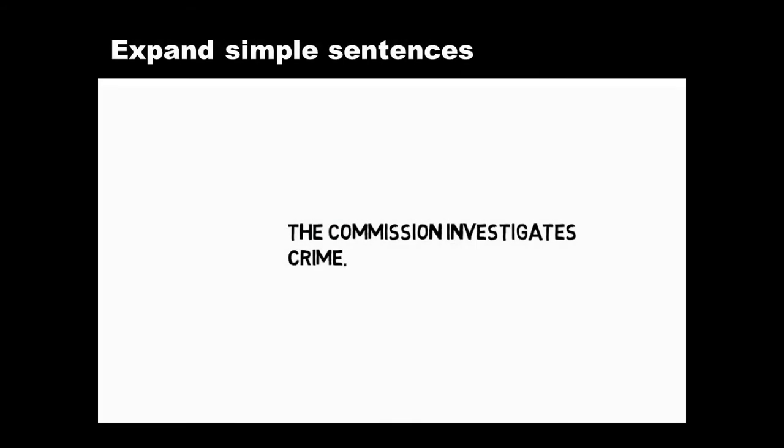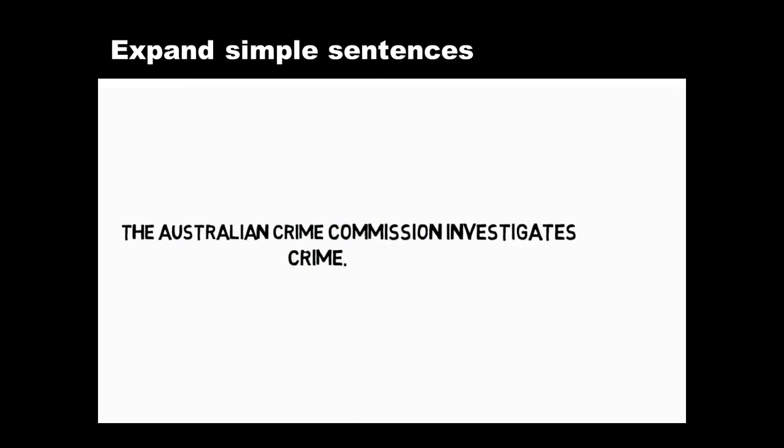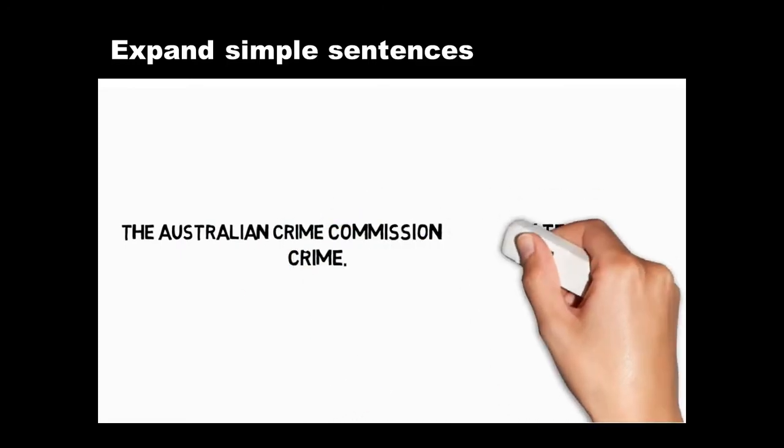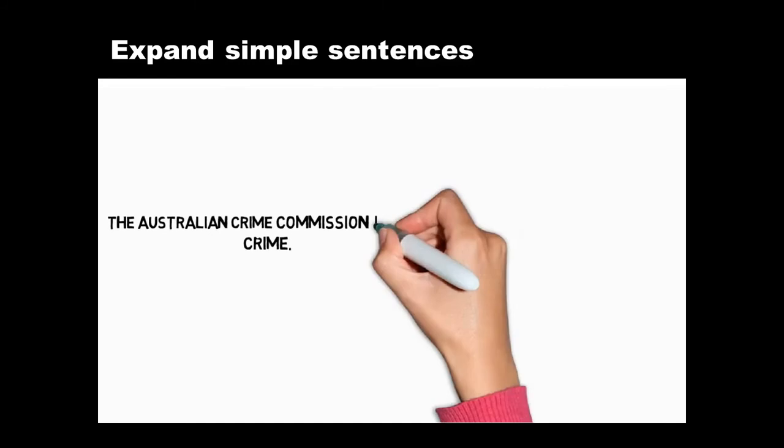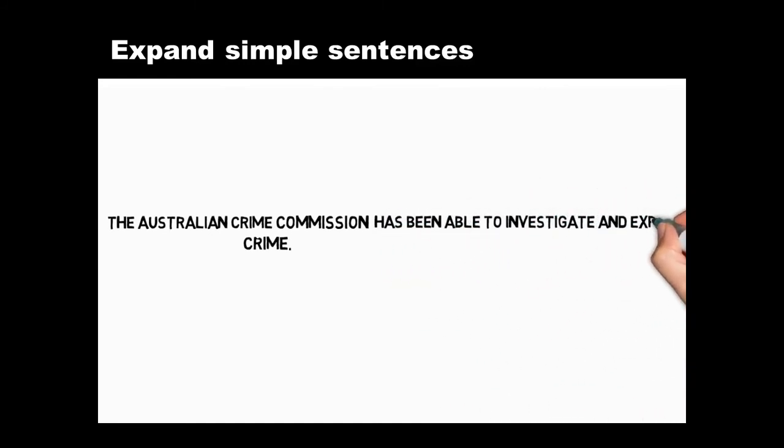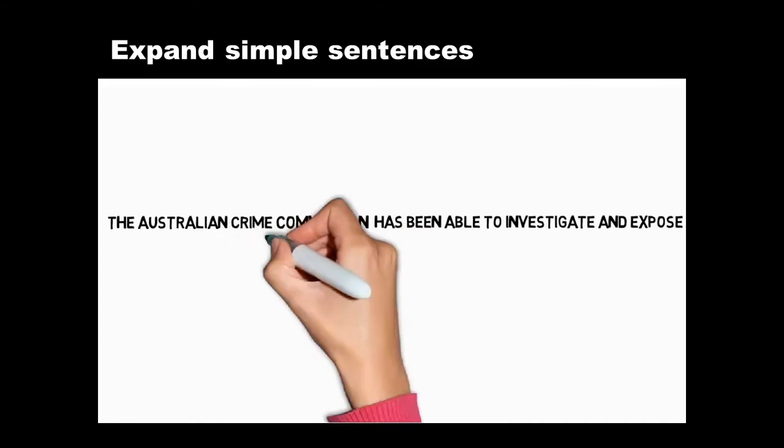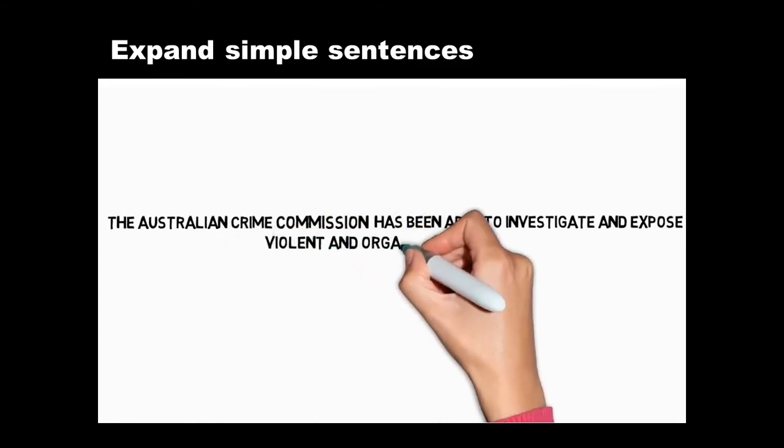You can expand simple sentences by adding more words to the subject, verb or object, making the subject more precise and changing the verb form if you need to, or qualifying your object, narrowing its scope like this. These techniques help you flesh out your ideas and make your writing more interesting to read.